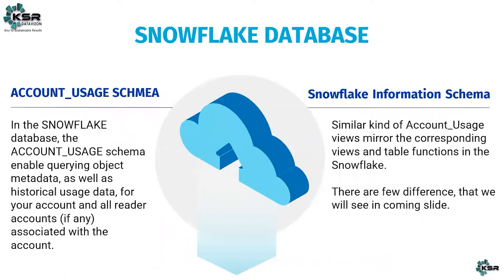In the Snowflake database — whenever you create your account with Snowflake, a Snowflake database is created in the backend. Inside the Snowflake database there will be different kinds of schemas, such as account_usage schema, information schema, and many others. The account_usage schema enables querying object metadata as well as historical usage data for your account and all reader accounts, if any, associated with the account. So anything you do — any table, view, or object you query or act on — account_usage schema will store all that information for your analysis.